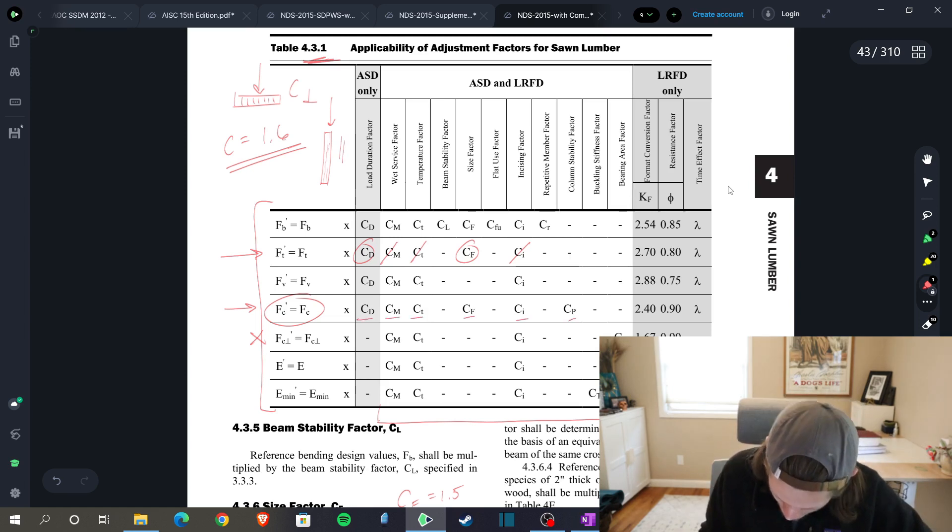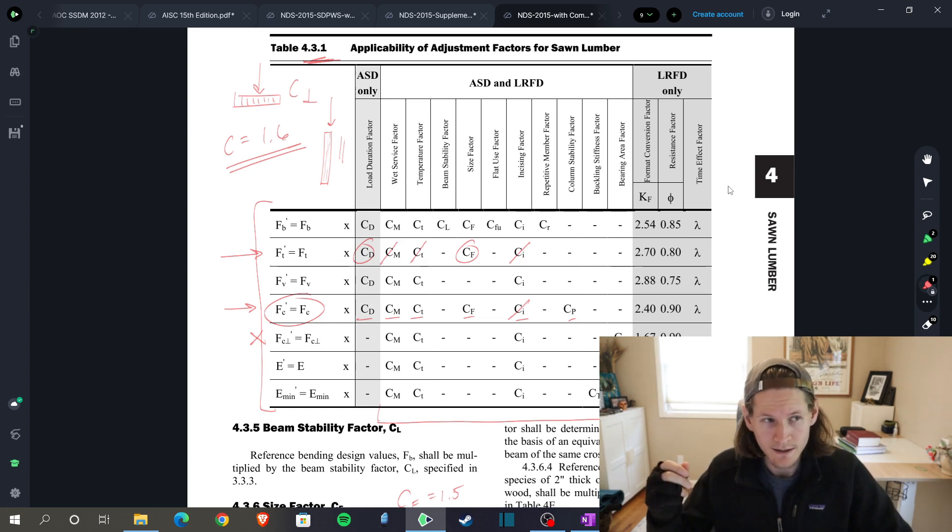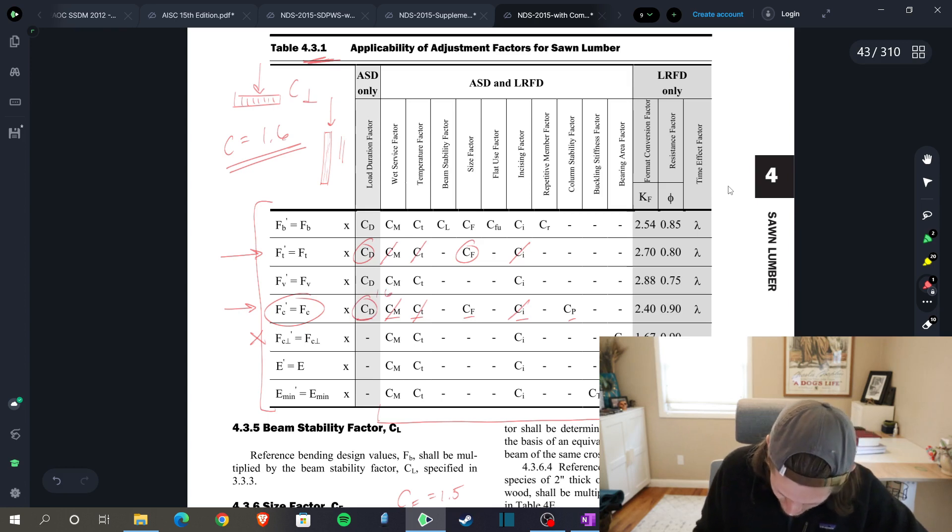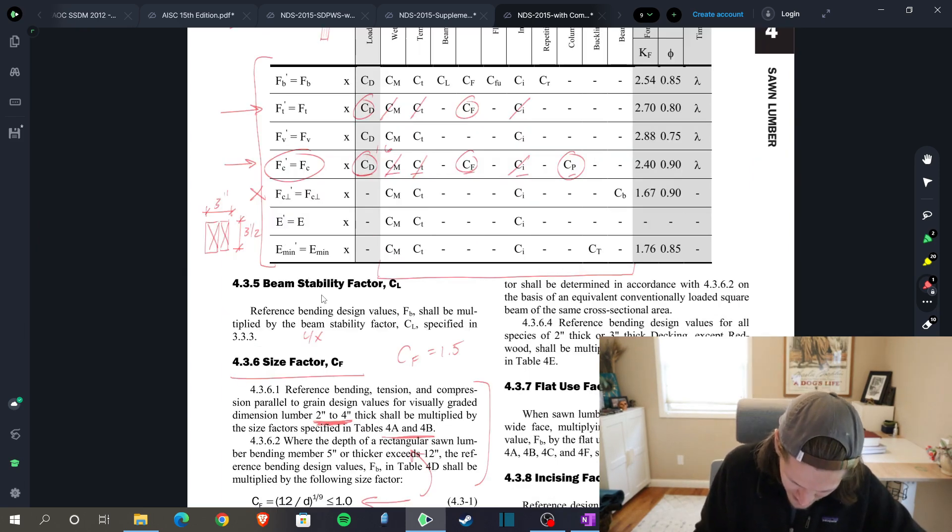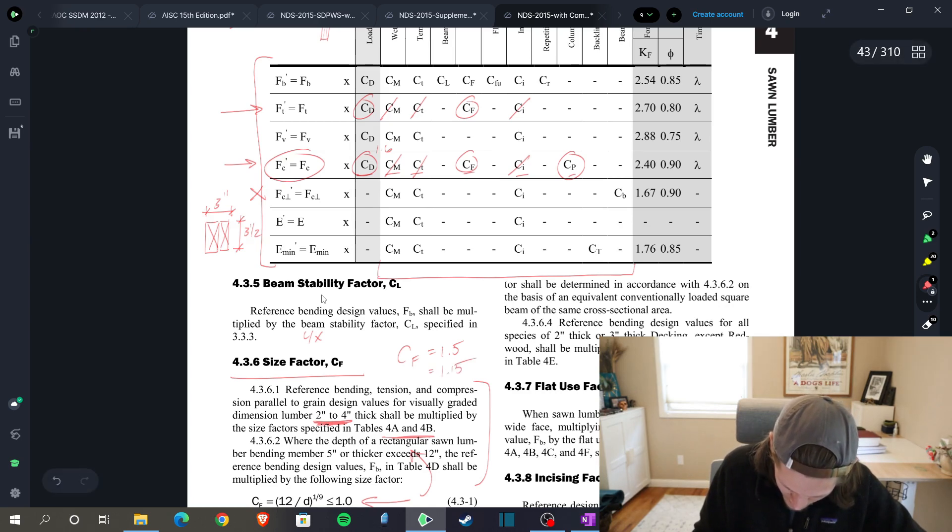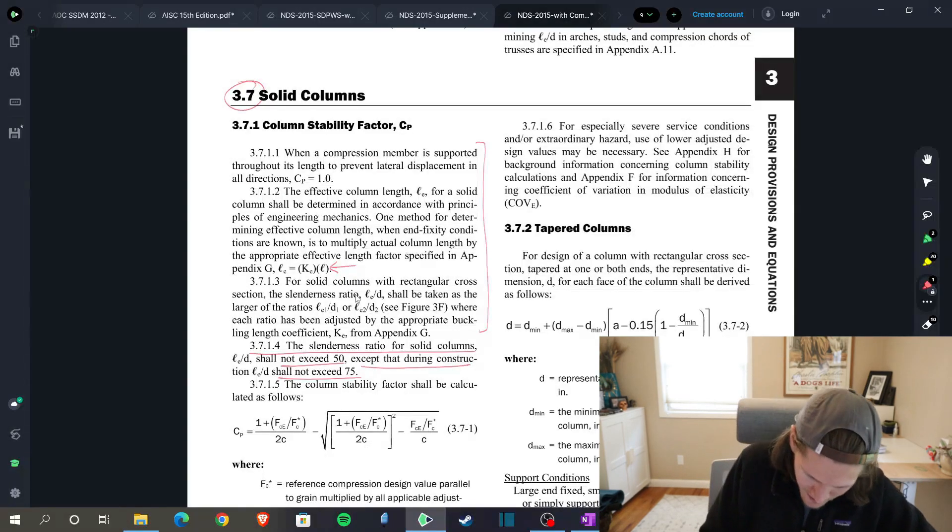Everything that we just did for slenderness check is in section 3.7, which is solid columns. We now find ourselves back at this table. We are doing compression parallel to grain. Our factors: CD, CM, CT, CF, CI, CP. Incising, we're not doing that again. So that's just 1.0. We are indoors. So we have a controlled climate, which means our temperature and our moisture are both 1.0. C sub D is still 1.6. CF will change and it actually does change to 1.15. And our FC is equal to 1700 PSI.